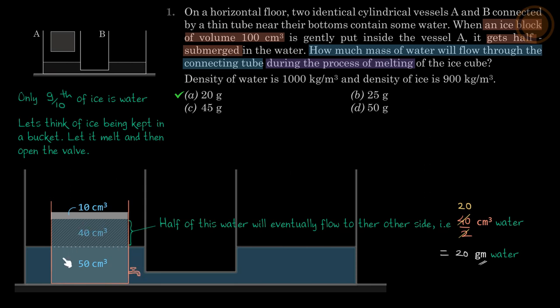This ice is put in half submerged, so half is 50 cm³ submerged at this level, and 50 cm³ ice, and we have this in a bucket.